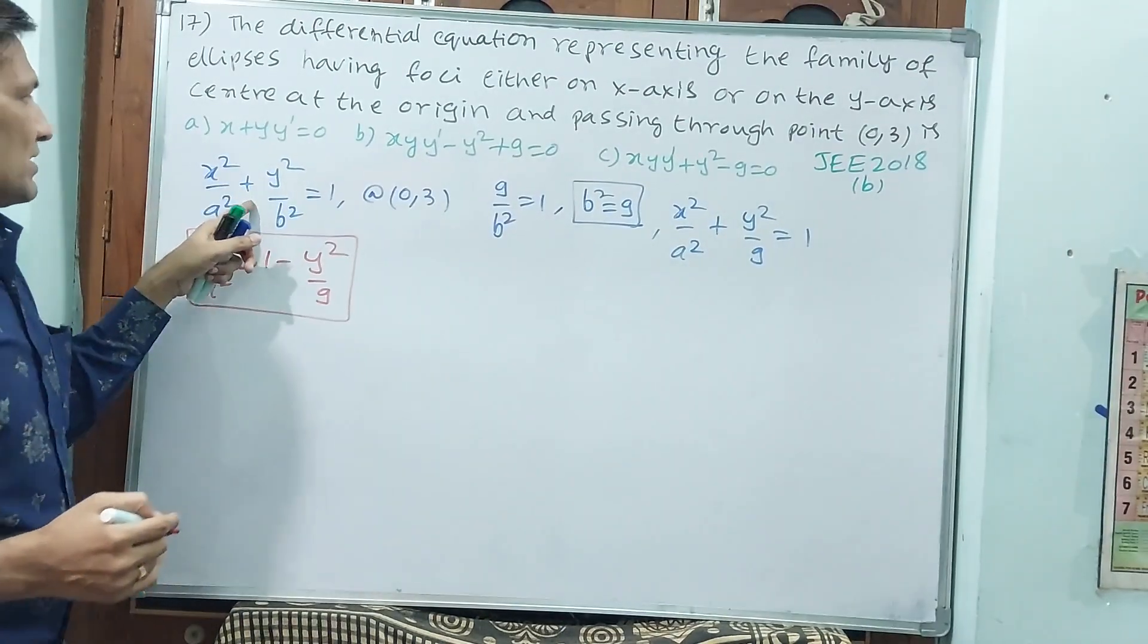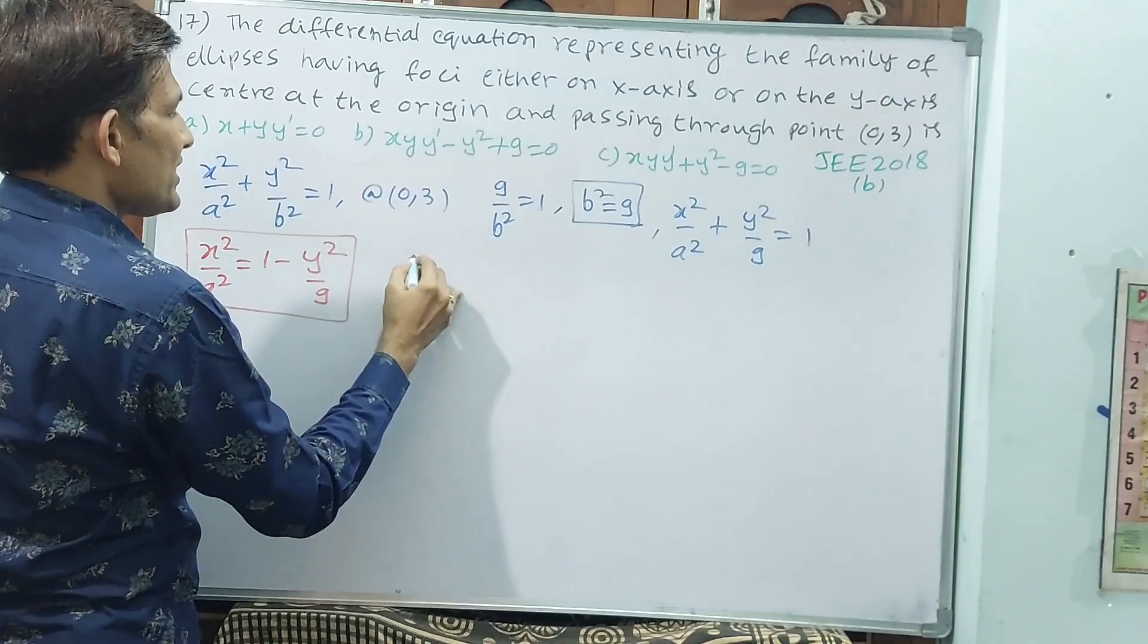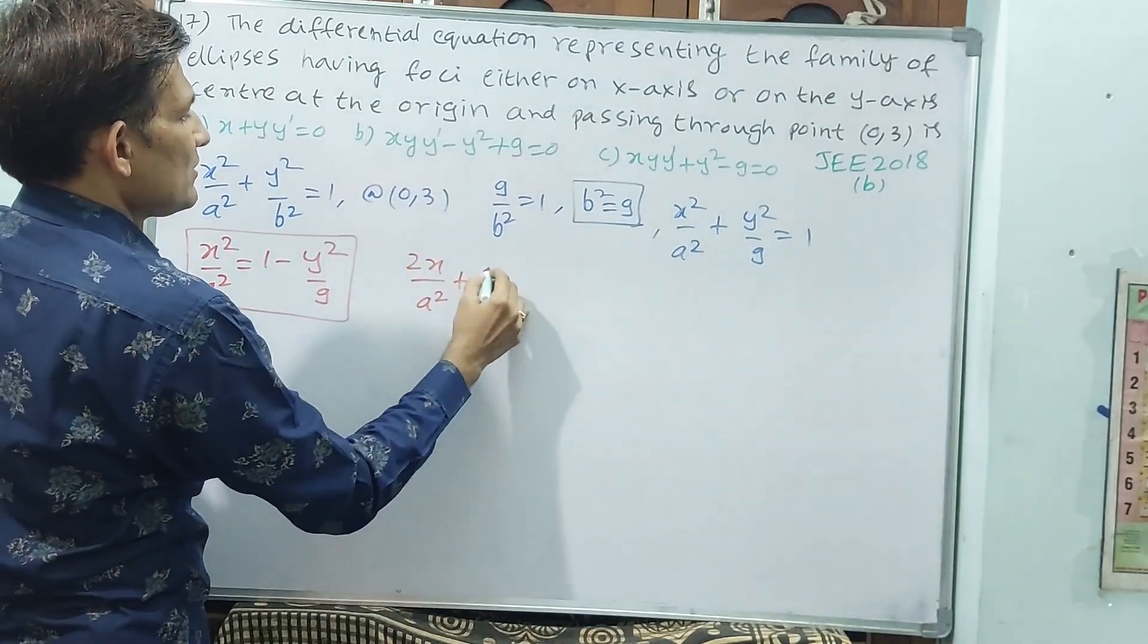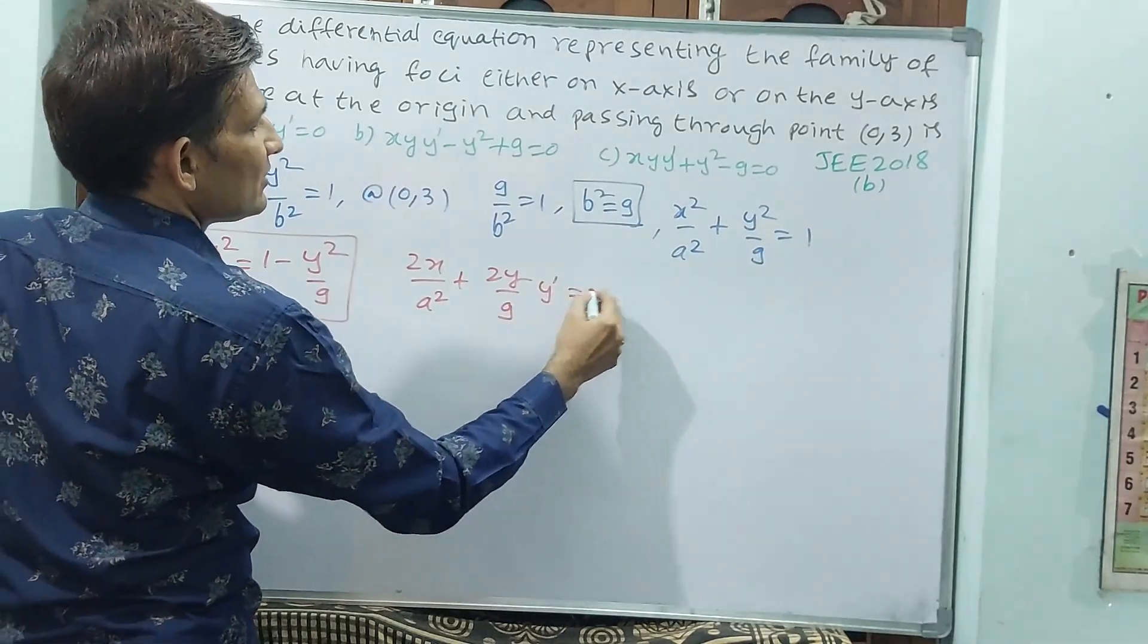Now, we differentiate this standard equation. If you differentiate this 2x by a square plus 2y by 9 into y-dash is equal to 0.